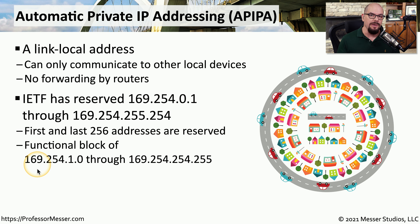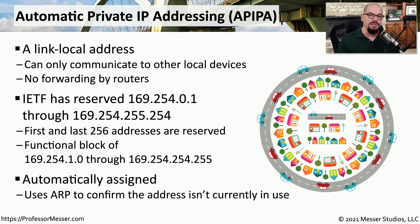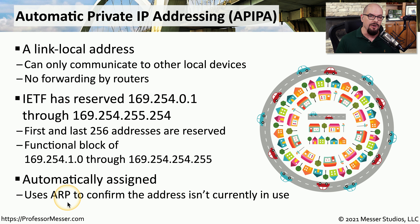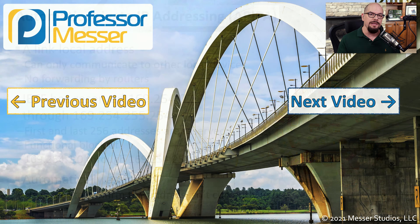This range is actually slightly smaller in practice because the APIPA standard reserves the first and last 256 addresses, so the actual usable range is 169.254.1.0 through 169.254.254.255. If a DHCP server is not available, the APIPA assignment process begins: your computer picks a random address in this range and sends an ARP to the network to see if anyone else is using that IP address. If there's no response to the ARP, the address is free and assigned to that computer. If you see a device with an APIPA address, you're probably connected to a network without a DHCP server, or the DHCP server is no longer functioning.